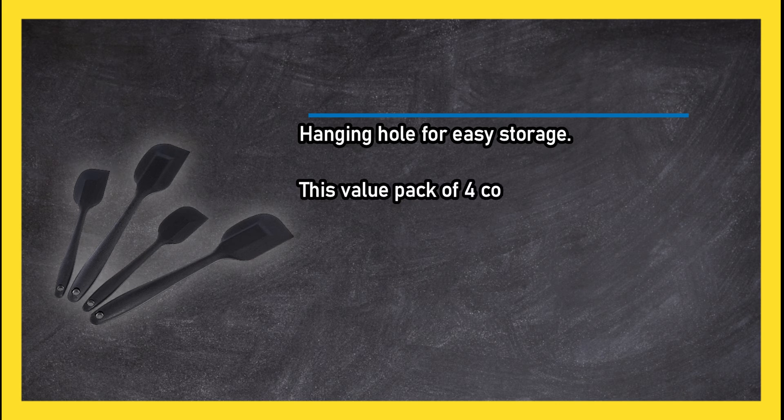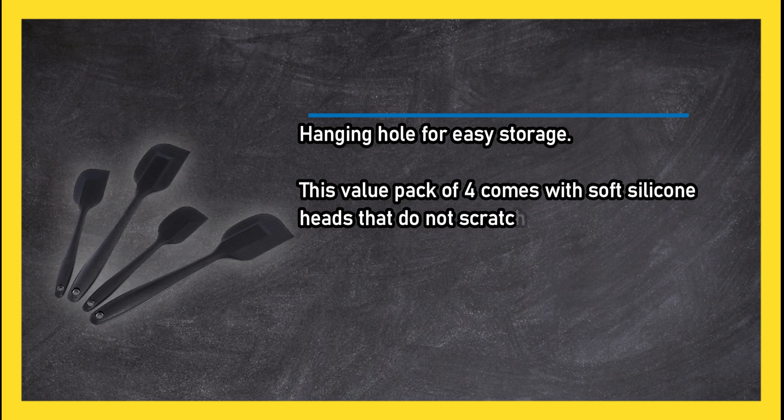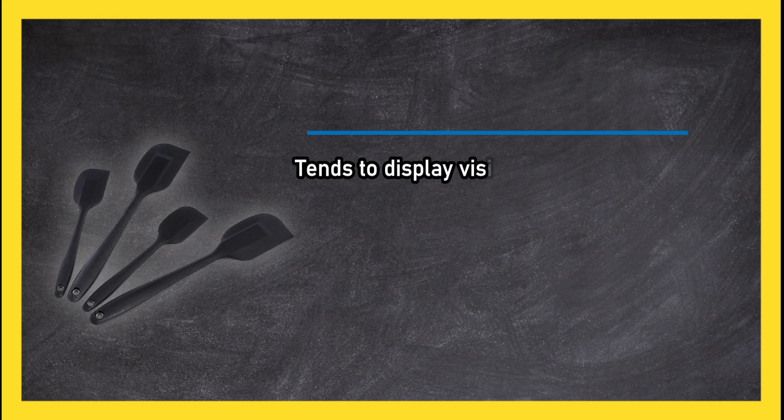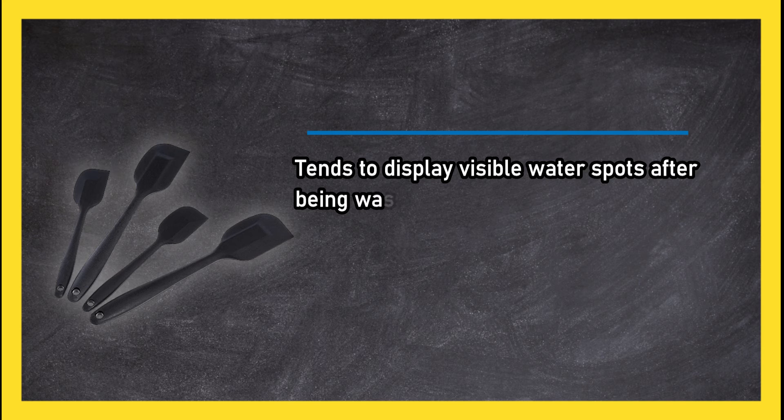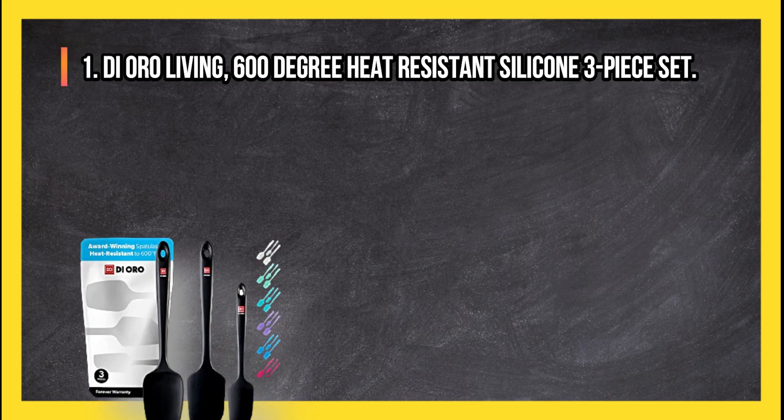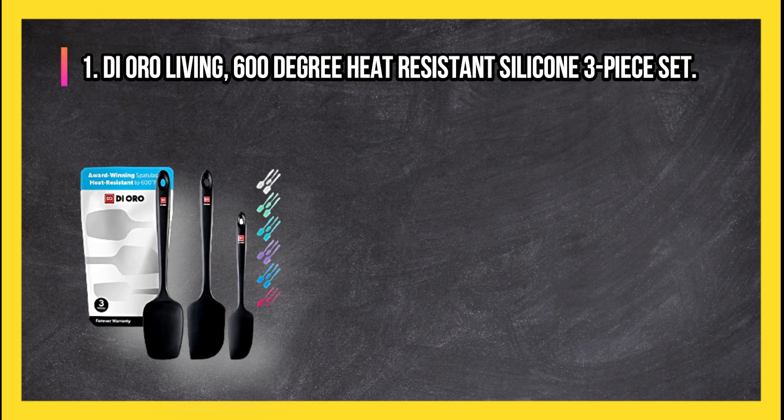This value pack of four comes with soft silicone heads that do not scratch surfaces and are good for nonstick cookware. Tends to display visible water spots after being washed. At number one: Dioro Living 600 Degree Heat Resistant Silicone three-piece set.